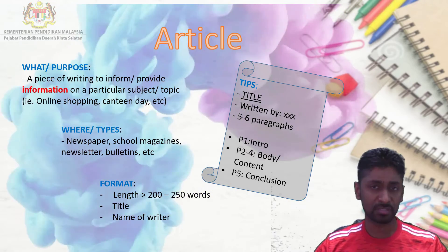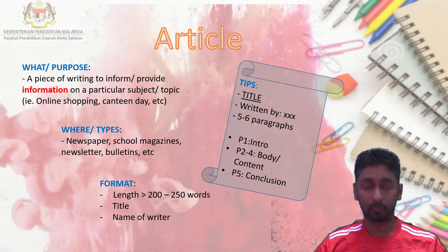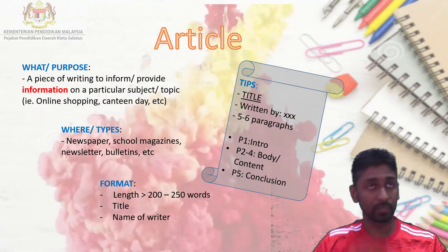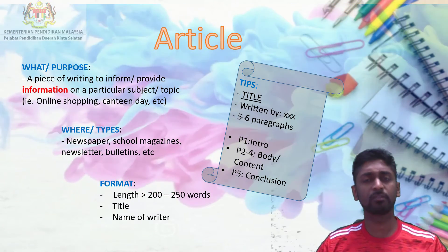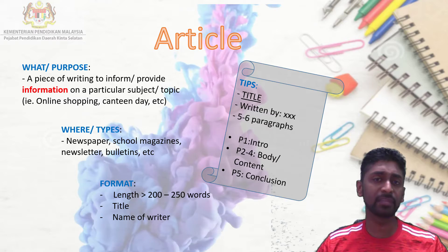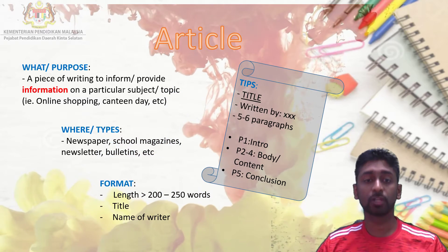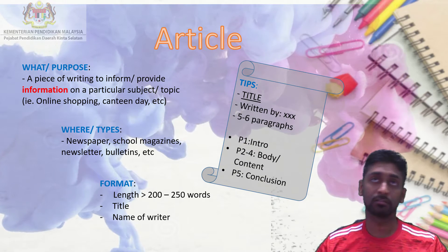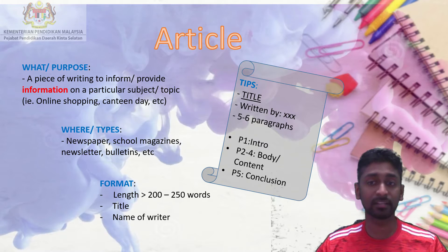A few tips on how to write: start with the title, underlined, as mentioned earlier. Then write 'Written by' or 'By' followed by your full formal name. You would normally have about five to six paragraphs — paragraph one introduces the topic, paragraphs two, three, and four form the body, and paragraph five serves as the conclusion to summarize the whole article.